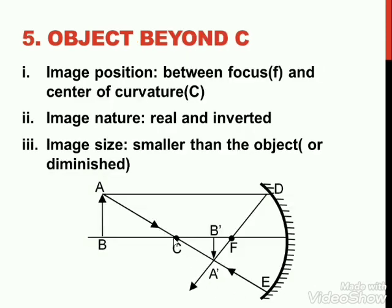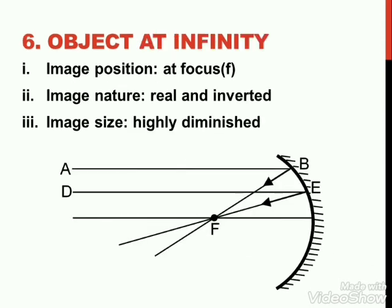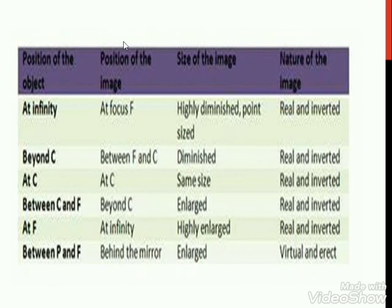Fifth case: object placed beyond C. Applying the same two rules with the object beyond C, we find the image formed between F and C, inverted and real. Sixth case: object at infinity. Since the object is at infinity we draw parallel lines A and B passing through the mirror. These pass through focus, so the image forms at focus — it is very small, point-sized.